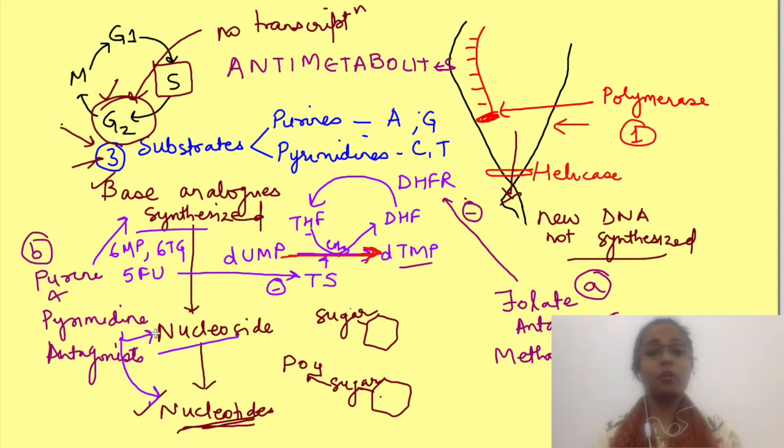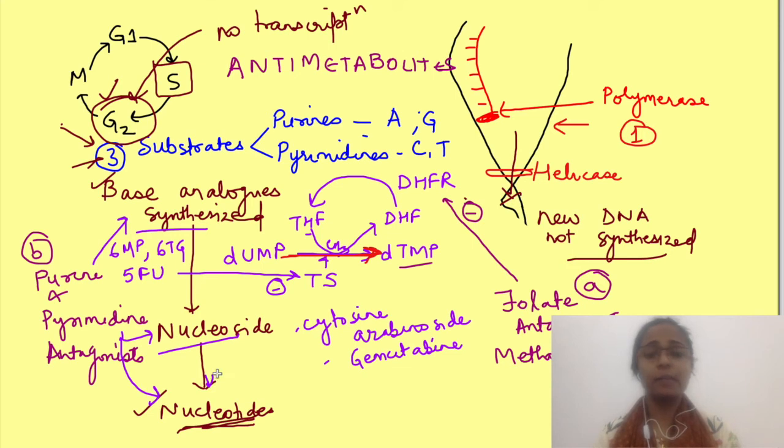Nucleoside analogues are analogues of adenine and cytosine, that is cytosine arabinoside and gemcitabine. Since the base analogues of adenine and cytosine can't be taken up by cells, only nucleoside analogues are taken up by cells and converted to nucleotides. So we use their nucleoside analogues.